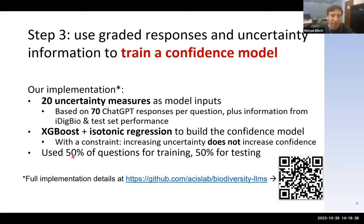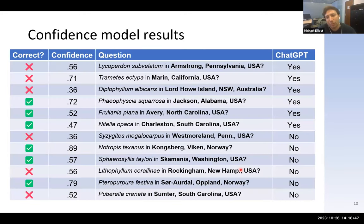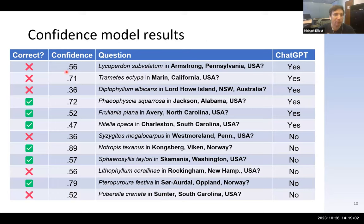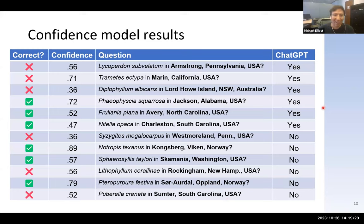We used half the dataset for training and half for testing. Here's a small sample from the test dataset — a little cherry-picked but for illustrative purposes. We asked ChatGPT 12 questions; half the time it said yes, half the time no, about different species in different locations. There were six incorrect and six correct responses. Overall, ChatGPT's accuracy on this set was 50% — which is pretty bad, since you could do just as well by flipping a coin.